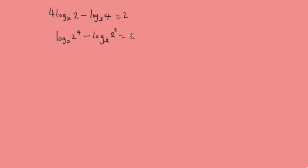Now we can use the division law. So we're now going to use the division law, which gives us log x, 2 to the 4 minus 2 squared, equal to 2. So then we've got log x 2 squared equals 2, which is going to be log x 4 equals 2.